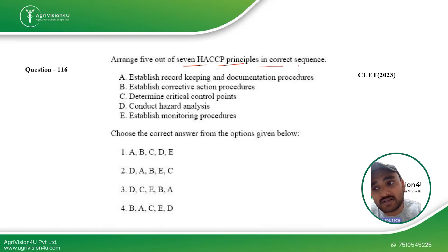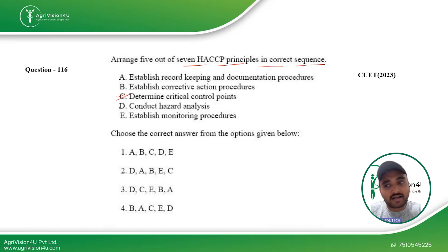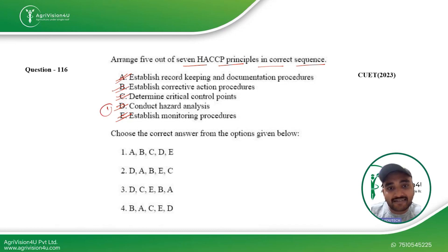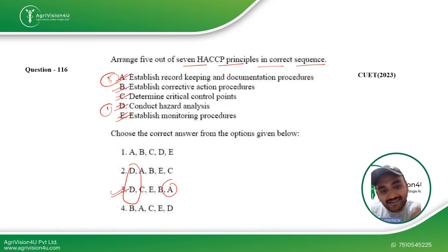Next, arrange five out of seven HACCP principles in the correct sequence. First is determination of critical control points, then conducting hazard analysis, then establishment of monitoring procedures, then corrective action procedures, and finally record keeping. Conduct hazard analysis comes first and documentation procedures come last. So option D should be first and option A should be last, making the third option the right answer.